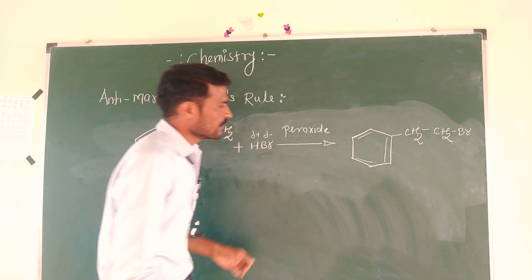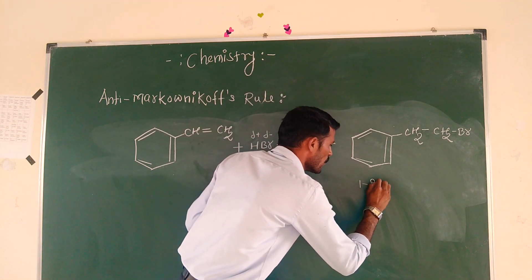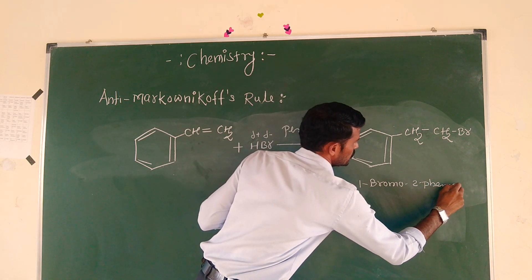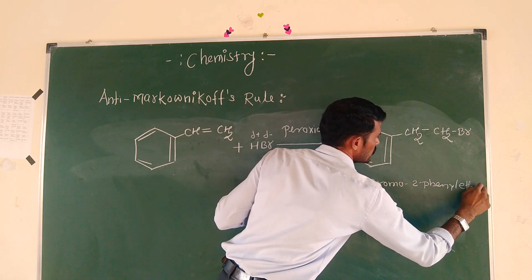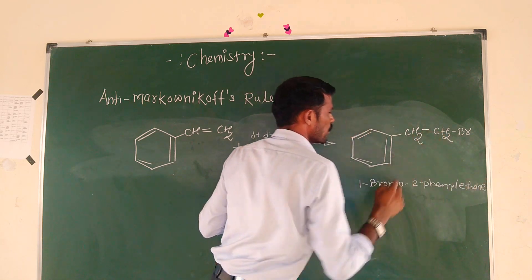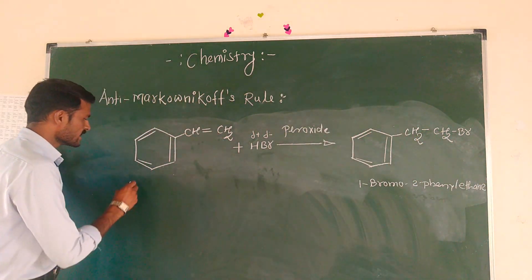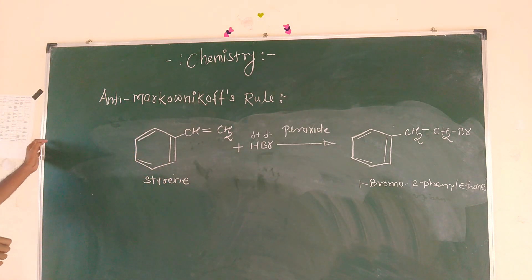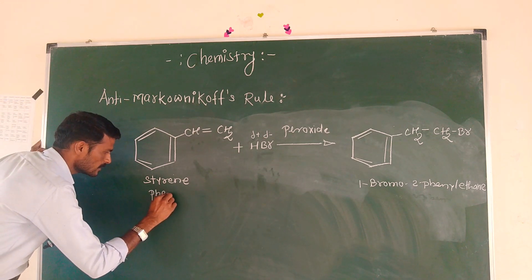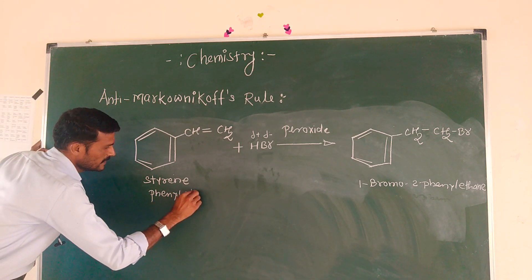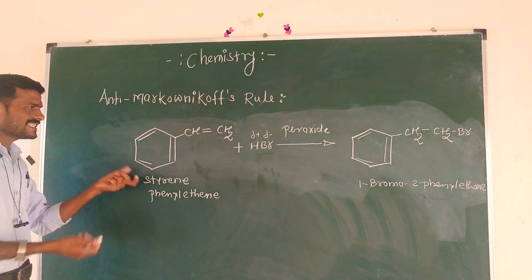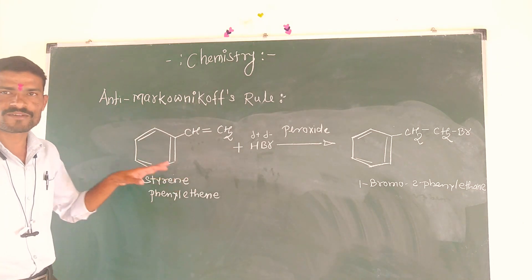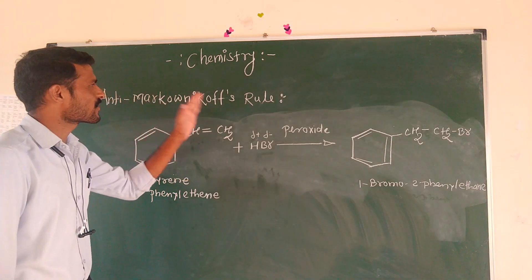Two phenyl groups, one bromine — that's the product. Two phenyl, one bromine. Styrene: S-T-Y-R-E-N-E. The phenyl vinyl group follows the Anti-Markovnikov's Rule.